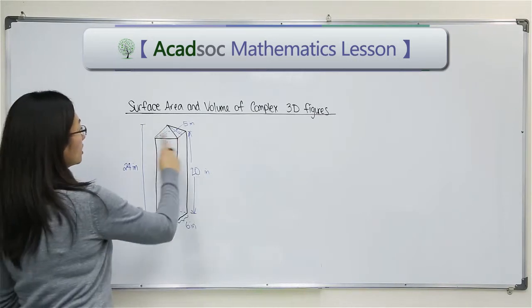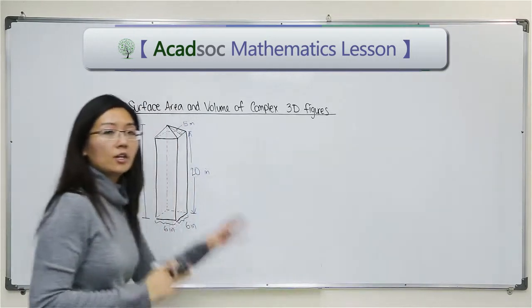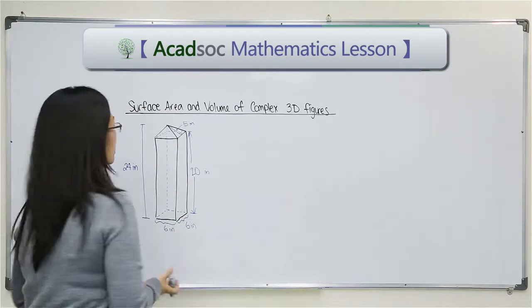I have the pyramid on top and also a rectangular prism underneath it. So I can find out each of the surface areas separately and then combine them together.